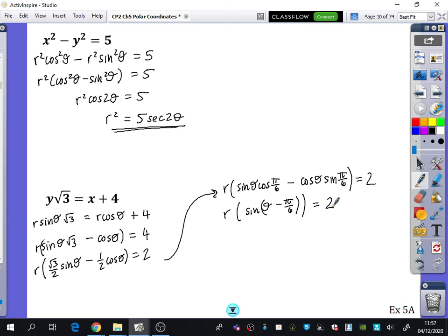So then we get that r = 2 cosec(θ - π/6), which in a way is kind of cool because the straight line equation of y√3 = x + 4 is really simple. But so is the polar one, which is unexpected. We would normally expect polar to be horrible and Cartesian to be nice, or vice versa. But here we've got it where it's kind of quite smart.